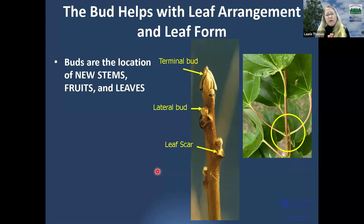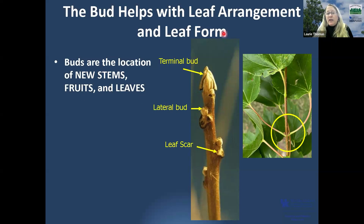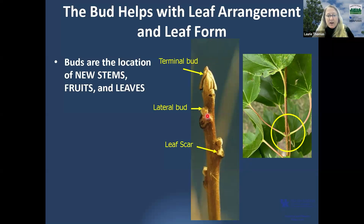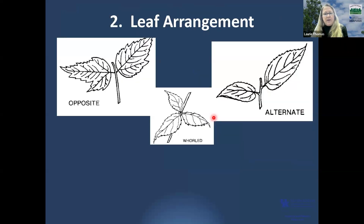Another thing to look at is buds. By June you'll see buds set for next year's growth. Buds are the location of new stems, fruits, and leaves, and knowing the buds helps determine leaf arrangement and leaf form. On a twig, you have lateral buds along the sides and a terminal bud responsible for shoot elongation. You can also see the leaf scar underneath a lateral bud, which is where last season's leaf was attached.